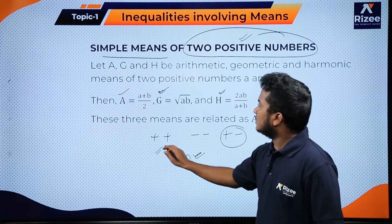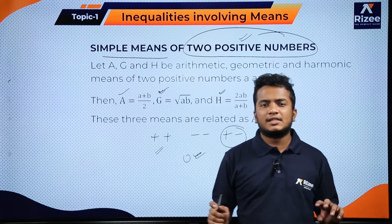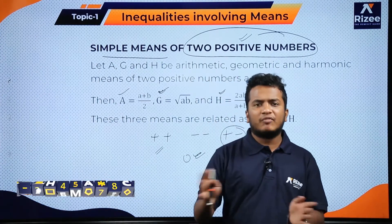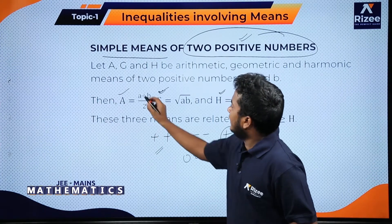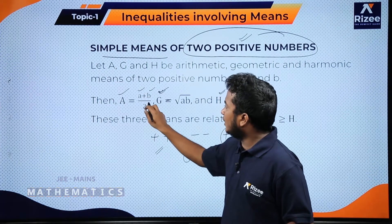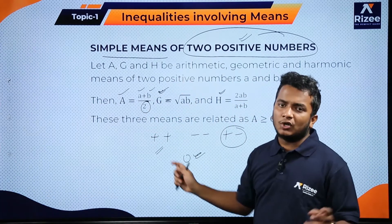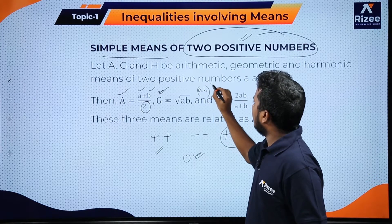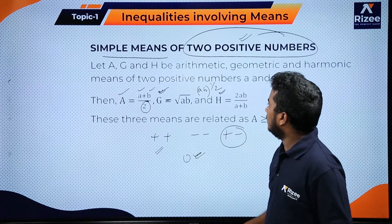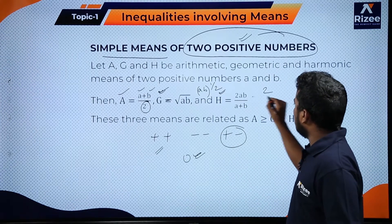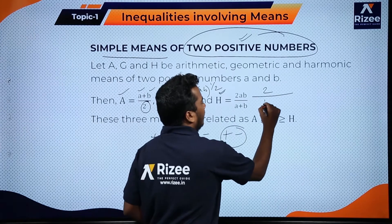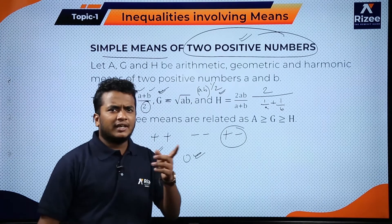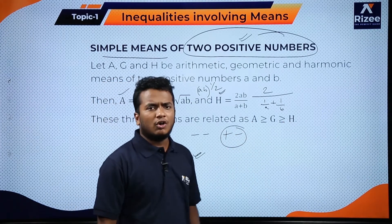Arithmetic mean is simply the average: sum of numbers divided by count of numbers, which is (a + b)/2. Geometric mean of two terms is (a·b)^(1/2), the product raised to the power 1 by number of terms. Harmonic mean is the number of terms divided by the sum of reciprocals, which is 2 divided by (1/a + 1/b).